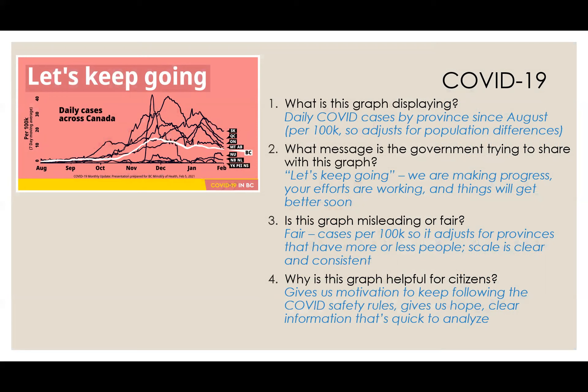Is this graph misleading or fair? I've been showing a lot of misleading graphs, but I would say this is a fair one, because the scale is there, all the information is given, the scale is going up by a consistent amount, and the scale starts at zero. You could ask yourself: is it fair to compare cases in BC versus Ontario? There are way more people in Ontario. But they take care of that because this is the cases per 100,000 people — so it takes that into account. Even though PEI has way fewer people than Ontario, this is still a valid comparison. So yes, I would say this is a fair graph.